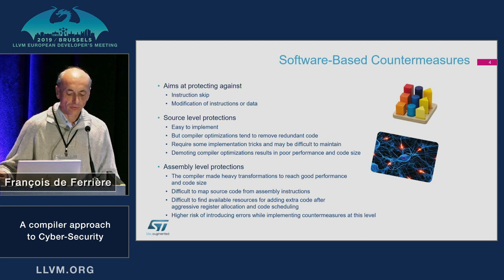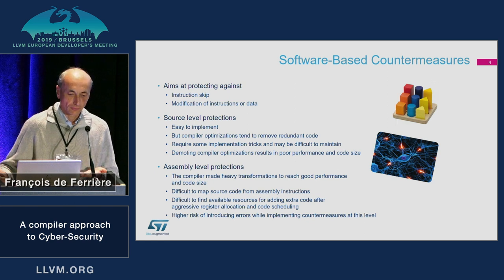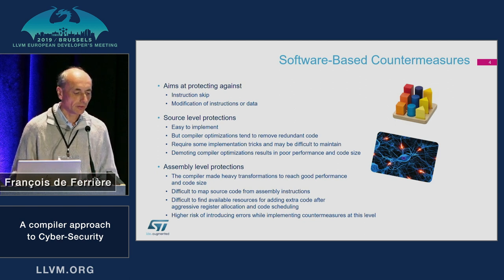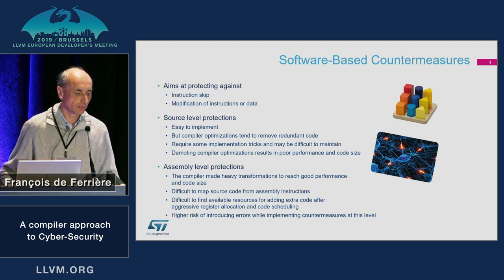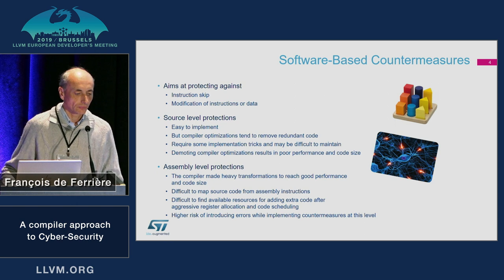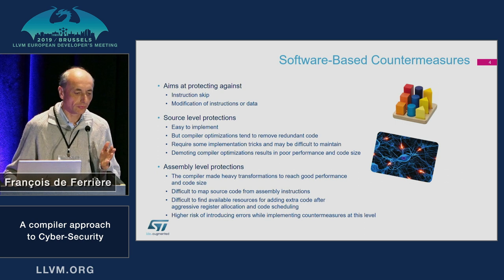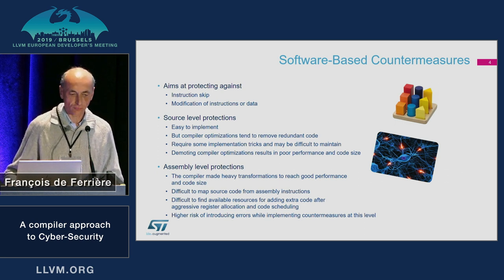The other approach is to implement the countermeasure at the assembly level. But the code is highly transformed and very efficient at this level, so it's difficult to map the original code to the assembly code, and there may be very few free resources to implement the countermeasure. The objective of this countermeasure is to protect the code against an instruction skip or modification of an instruction or data.